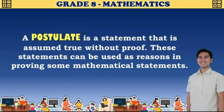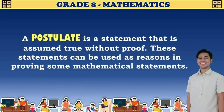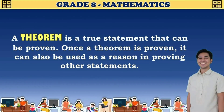A postulate is a statement that is assumed true without proof. These statements can be used as reasons in mathematical arguments. A theorem is a true statement that can be proven. Once a theorem is proven, it can also be used as a reason in proving other statements.